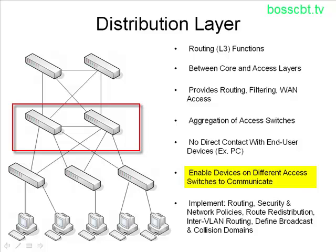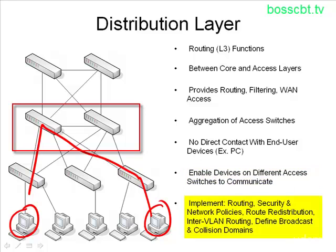Distribution layer switches enable devices on different access switches to communicate. For instance, if a PC on one access switch needs to talk to a PC on another, it would traverse a distribution switch. By aggregating all the switches together, the distribution switches enable devices on different access switches to actually communicate with each other. When implementing a network design, the distribution layer handles security, routing, network policies of all sorts, routing redistribution, and if you have VLANs on your Layer 2 network, this is where inter-VLAN routing occurs — you need a routing device to route between VLANs and this is where that happens.